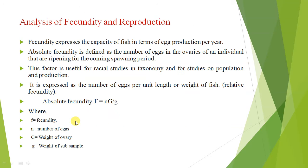Johansal also suggested a formula for analysis of fecundity and reproduction. Fecundity expresses the capacity of fish in terms of egg production per year. Absolute fertility is defined as the number of eggs in the ovaries of an individual that are ripening for the coming spawning period. This factor is useful for studies in taxonomy and for studies on population and production, expressed as the number of eggs per unit length or weight of the fish.